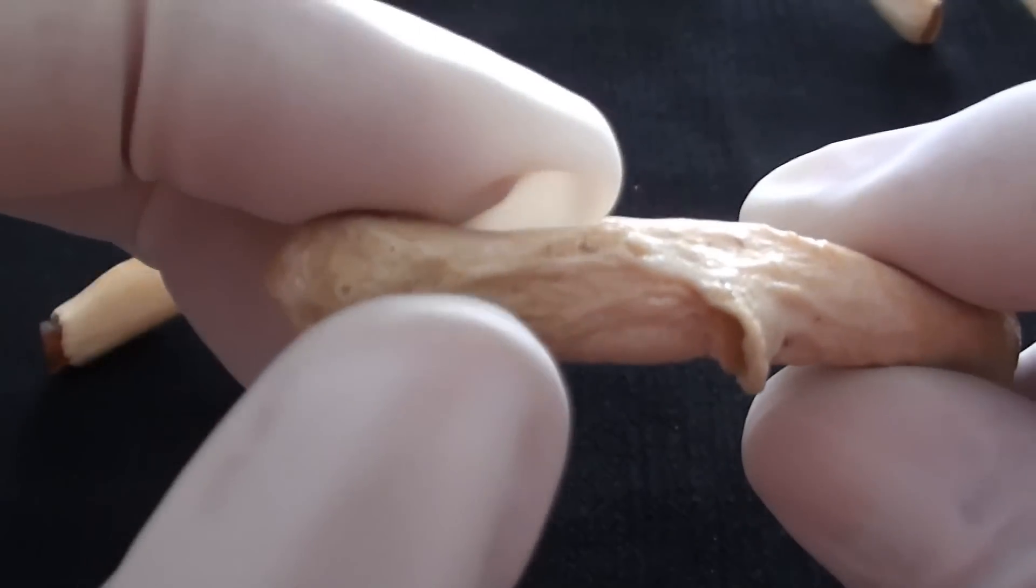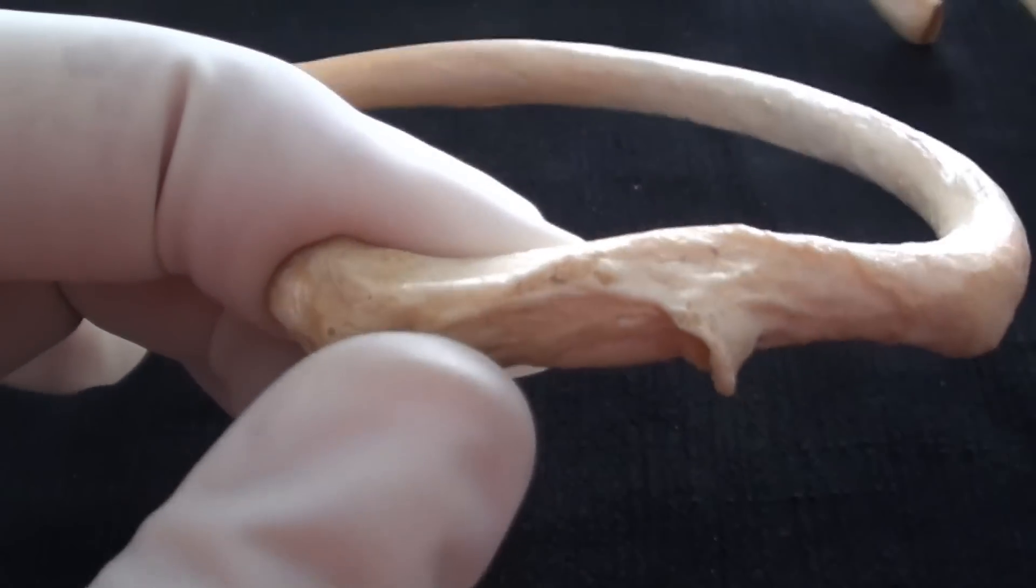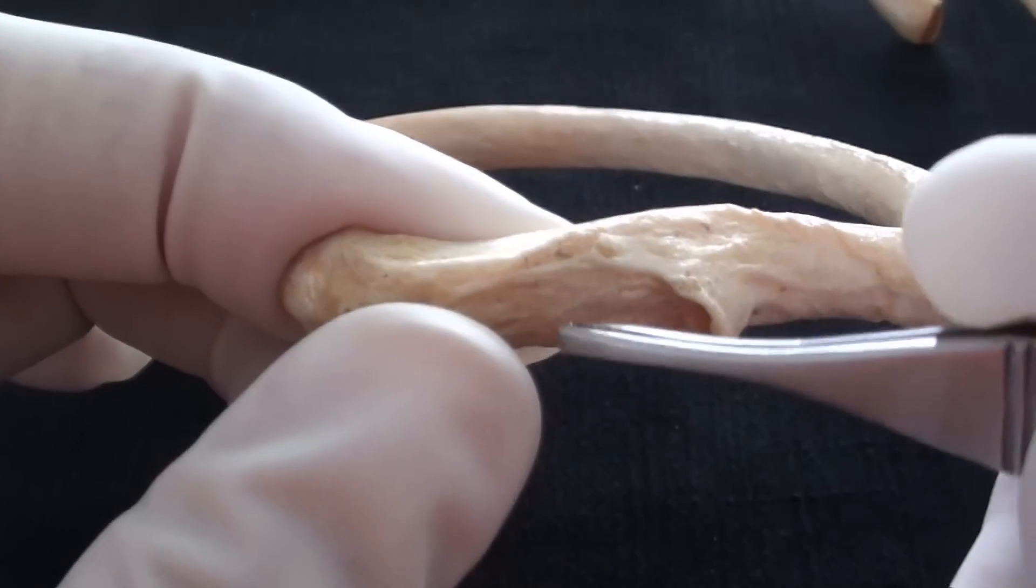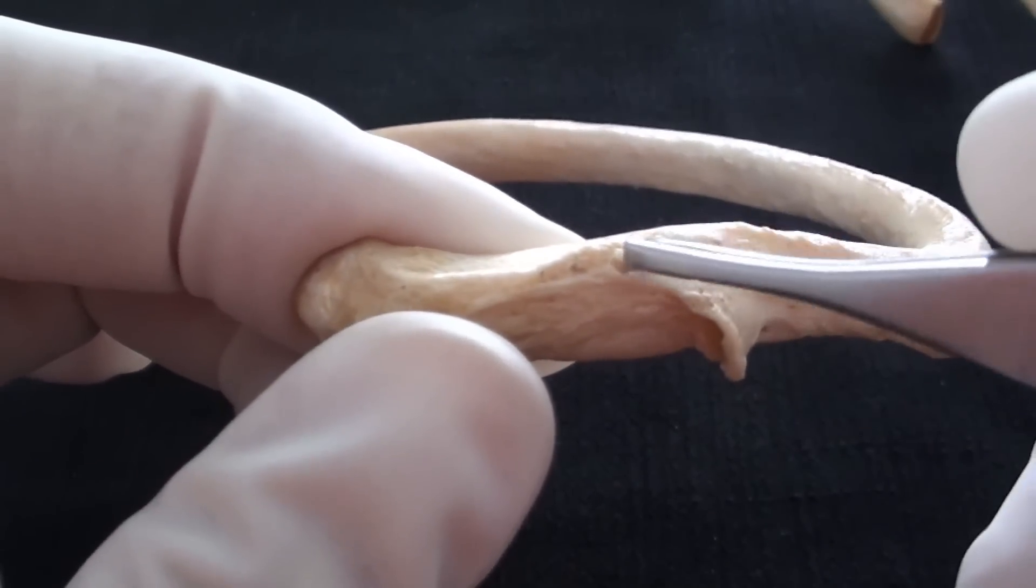Going further away from the neck, we are reaching the area that is known as the tubercle of a rib.